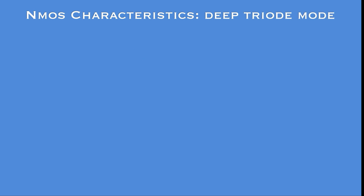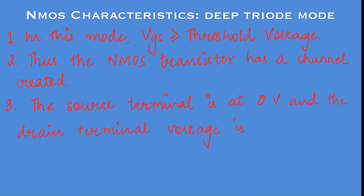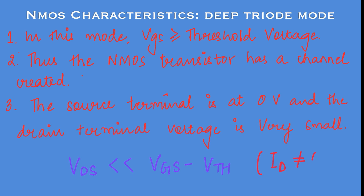In the next mode of operation, which is the deep triode mode, the gate-to-source voltage is greater than threshold voltage. Thus the nMOS transistor has a channel created. The source terminal is at 0 potential and the drain voltage is very small — actually very less as compared to the effective voltage VGS minus VTH. So VDS is far less than VGS minus VTH. But the drain current is not equal to 0 because the channel has been created.